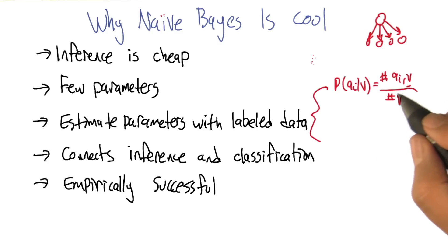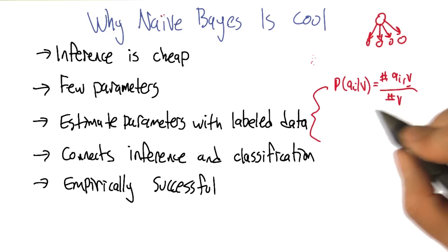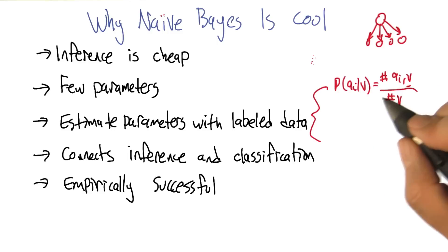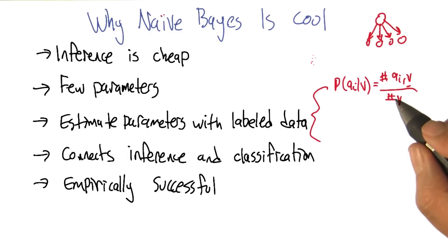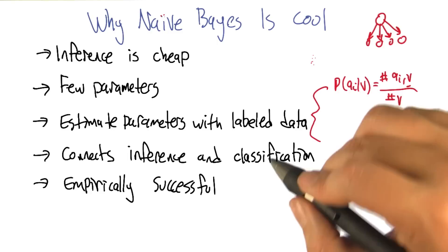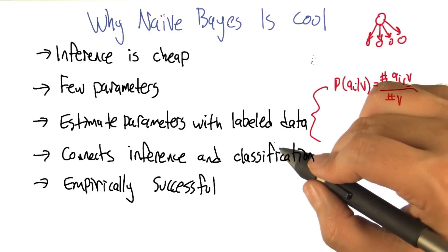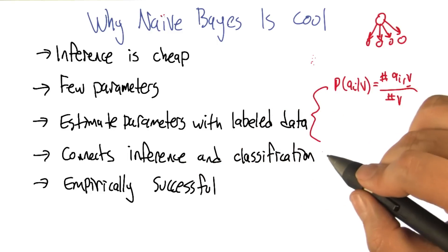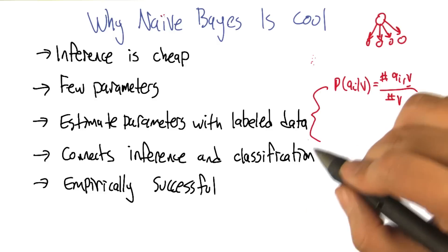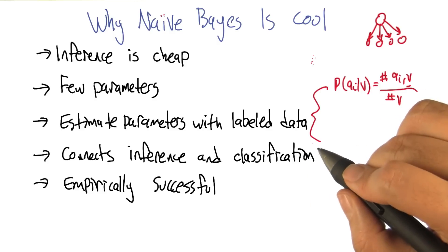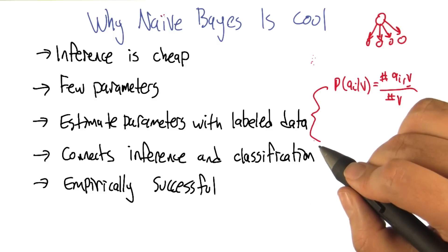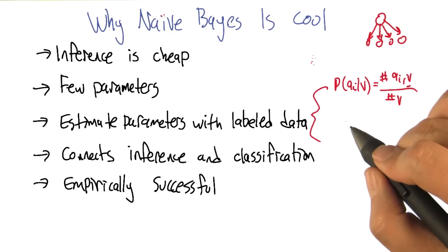In the case of infinite data, this is actually going to give you exactly the right number. It also connects this notion of inference that we've been talking about with classification, which is mostly what this mini course has been about. So that's really great to have a connection.